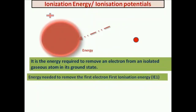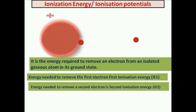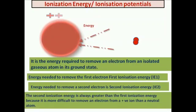The energy needed to remove the first electron is known as first ionization energy. If we want to remove one more electron from the resulting positive ion, we need to supply additional energy — that is the second ionization energy. Second ionization energy is always greater than the first, because it is more difficult to remove an electron from a positive ion than from a neutral atom.